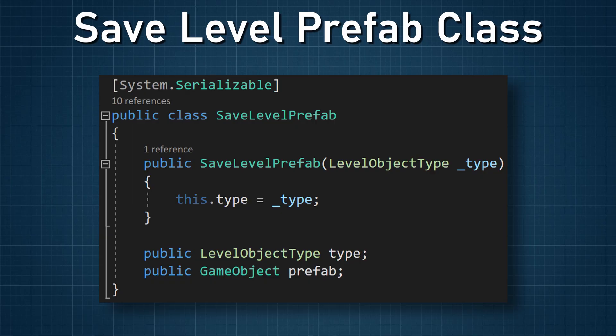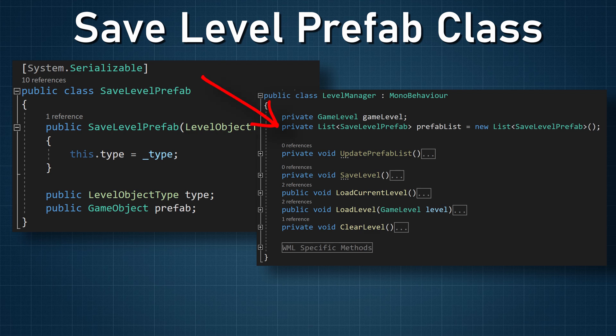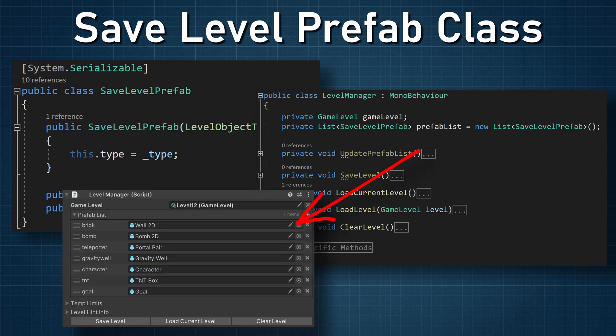When it comes to loading objects there are a few additional complications. The biggest issue is linking the object type with a prefab. I want a strongly typed connection — not some janky switch statement or block of if statements dependent on the wall object being the third prefab in a list and the bomb object being the fifth. That will 100% for sure break. So I created another class that contains the enum for the type of object and a reference to the corresponding prefab. This is the SaveLevelPrefab class — not to be confused with the similarly named SaveLevelObject class. You can see a list of this type in the LevelManager, which holds references to the prefab corresponding to each level object type, and is then used to instantiate the correct prefab.